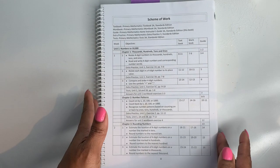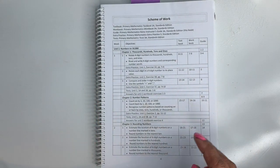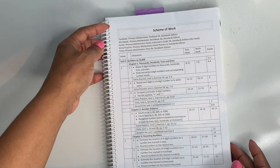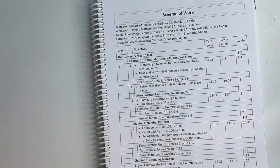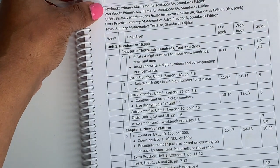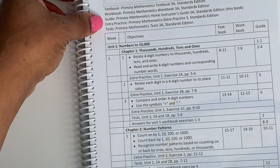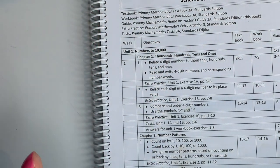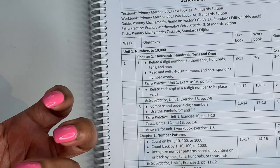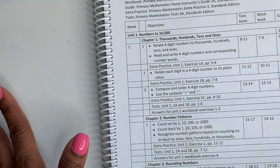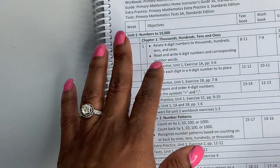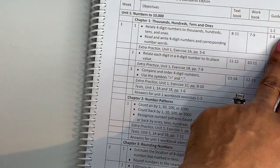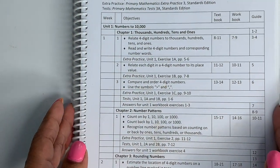So now let's get to the scheme of the work. This is your meat and potatoes guys. This is going to tell you how to juggle all the balls if you decide to use the textbook, the workbook, the guide, the extra practice, and the test. This is going to show you how all of it comes together from chaos to order. This is how it's broken down. Basic Excel sheet, spreadsheet. You have your week, your objectives, your textbook, workbook, and guide.